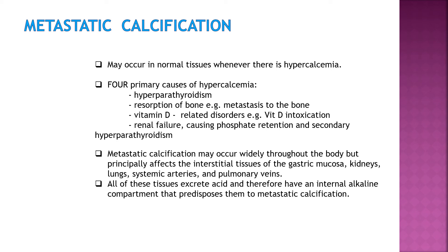Metastatic calcification may occur widely throughout the body, but it principally affects the interstitial tissues of the gastric mucosa, the kidneys, the lungs, systemic arteries, and pulmonary veins. These tissues excrete acid and therefore have an internal alkaline compartment that predisposes them to metastatic calcification.